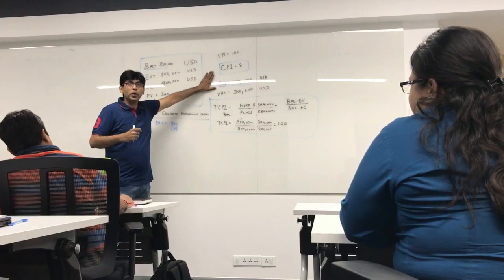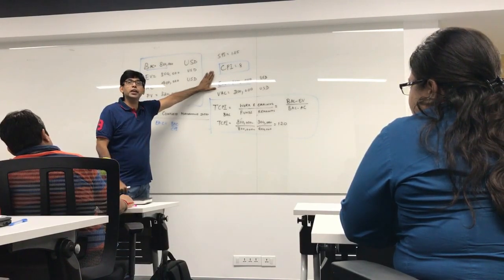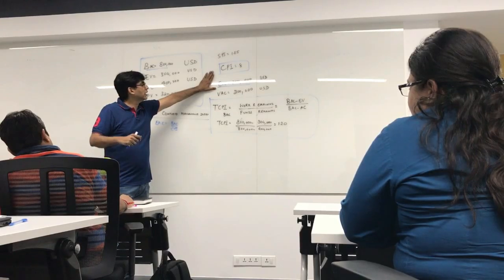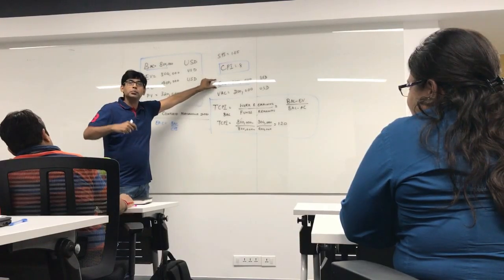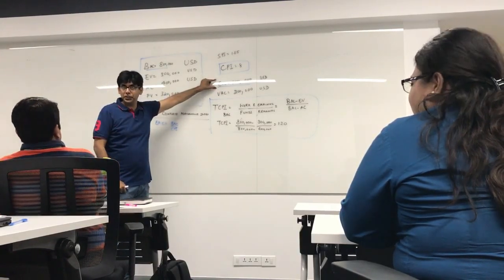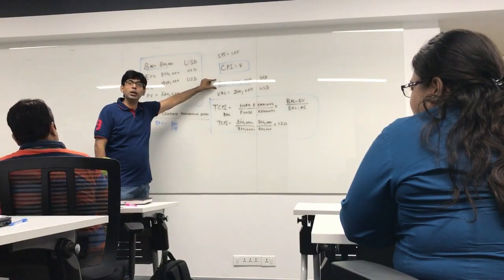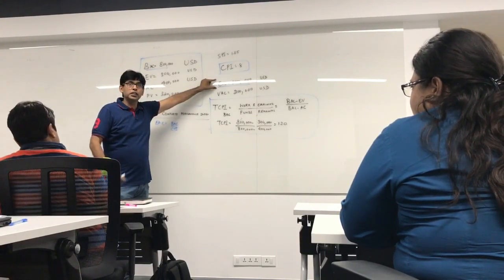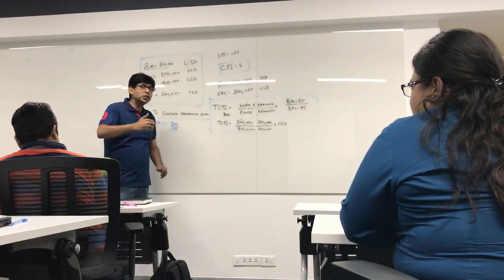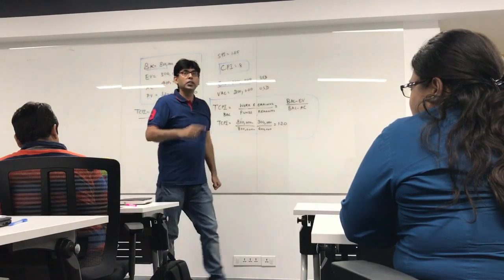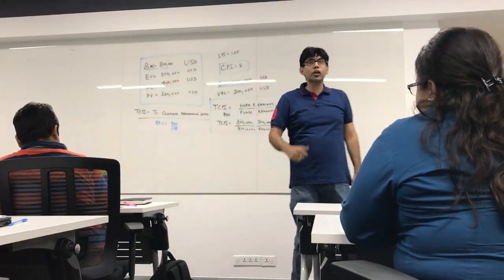If I keep on working at a CPI of 0.8, the project's forecasted cost at completion or estimated completion will be 1 million USD. So with respect to budget, how much additional money is required? 200,000 USD or 200K?